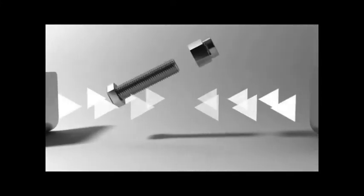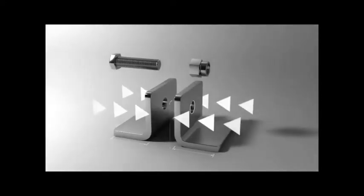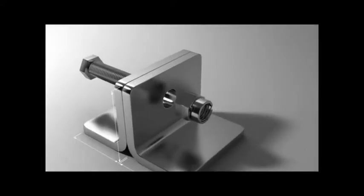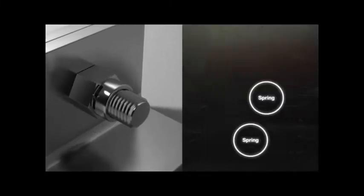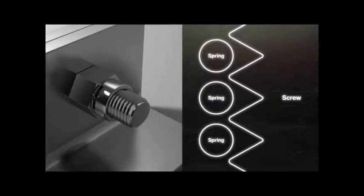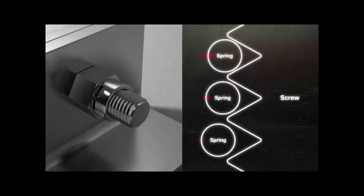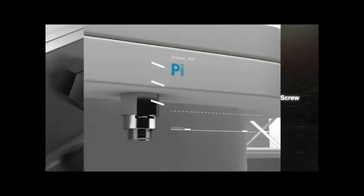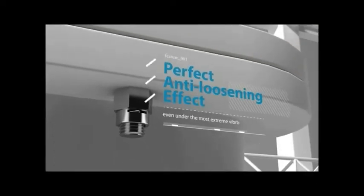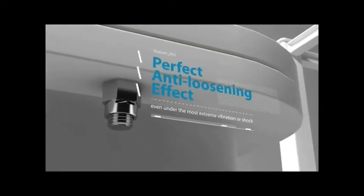This anti-loosening principle is based on the spring's ability to expand and easily fasten without much frictional resistance due to the spring's elasticity and tightening technology. Not loosening caused by external vibration or shock is prevented through the continuous application of elastic loading and automatic tightening achieved through the constriction of the spring, providing a perfect anti-loosening effect even under the most extreme vibration or shock.